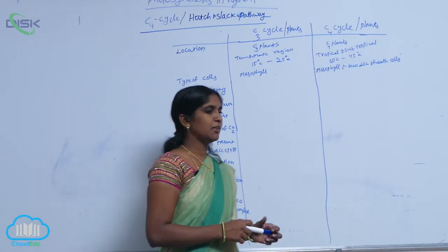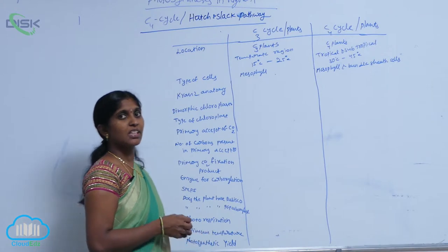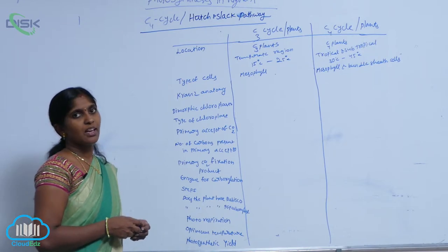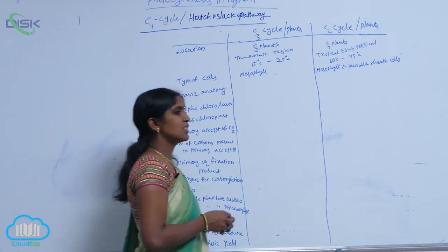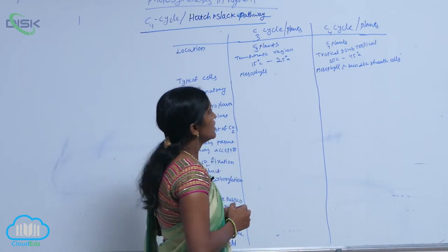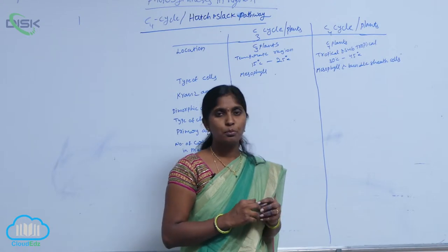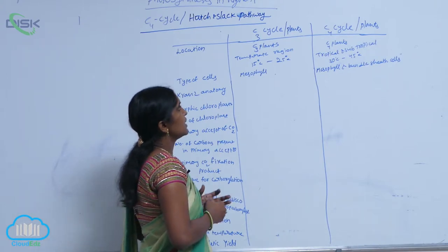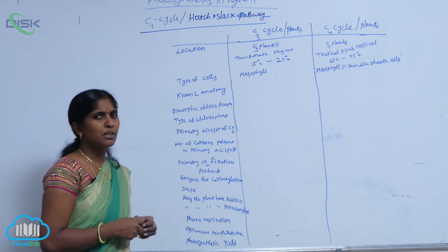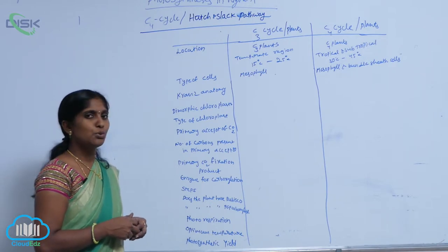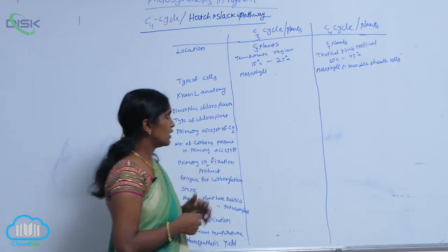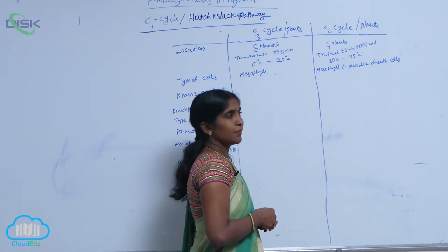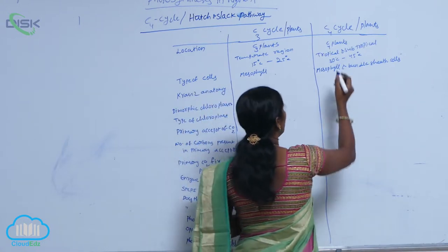This covers the differences between C3 plants and C4 plants, as well as the C3 cycle and C4 cycle. The C3 cycle is carried out in C3 plants, which are found in temperate regions at a suitable temperature of 15 to 25 degrees. C4 plants are located in tropical and subtropical regions and survive at temperatures of 30 to 45 degrees.